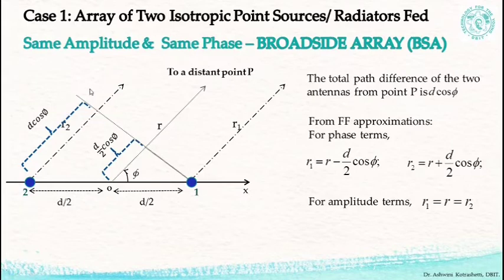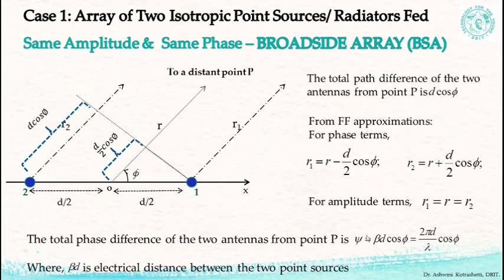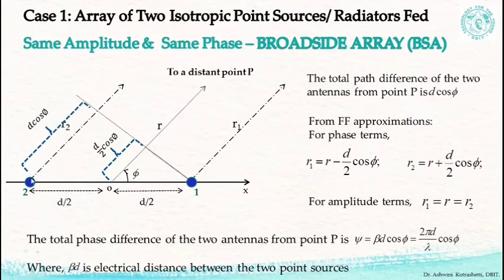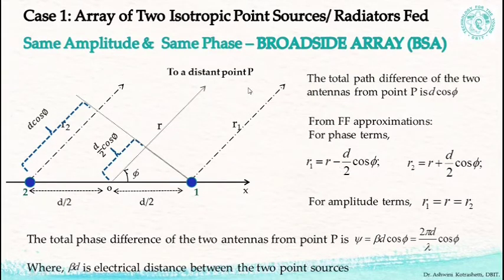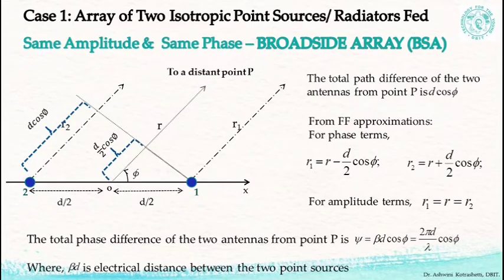If the path difference is d·cos(phi), then the phase difference is given by psi = beta·d·cos(phi) = (2π/lambda)·d·cos(phi). r1 and r2 are the field paths from the source to distant point p. We use far field approximations: for phase terms, r1 = r − d/2·cos(phi) and r2 = r + d/2·cos(phi); for amplitude terms, r1 = r2 = r.